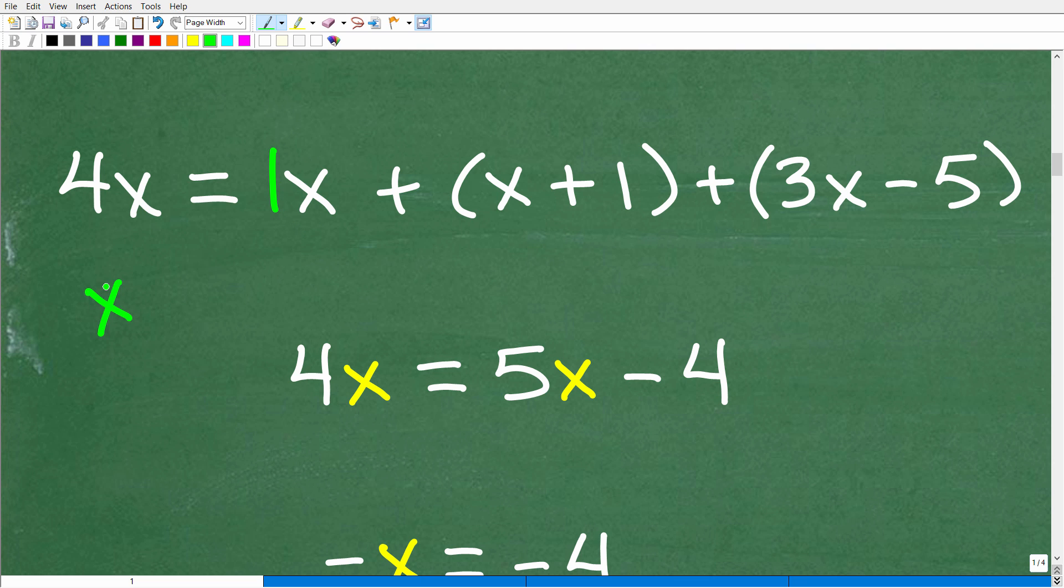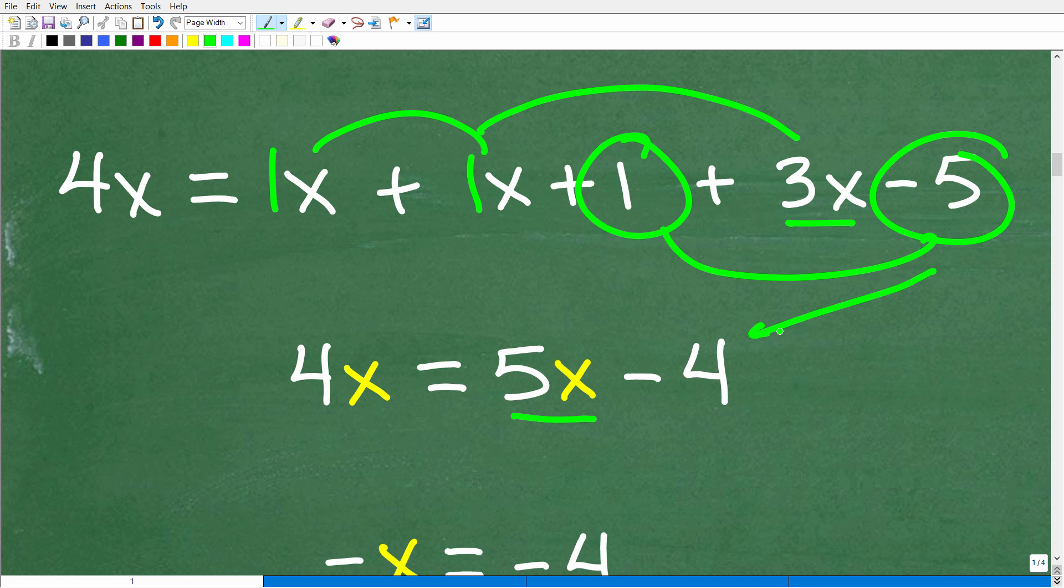So here's 1x here. We have, and we can drop these parentheses right here. The parentheses were plugged in to group things together. So mathematically, it's okay for me to drop these parentheses. You've got to be careful when you do drop parentheses because you can have a distributive property situation. But in this case, we're all adding. So I'm just going to drop them so we can focus on combining like terms and numbers. All right, so we have a 1x here, a 1x here, and a 3x here. So 1x plus 1x plus 3x is a total of 5x. And then of course, we have a positive 1 plus a negative 5. That gives me a negative 4. And then on the left-hand side, we simply have a 4x.